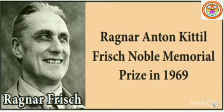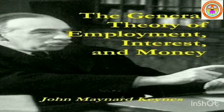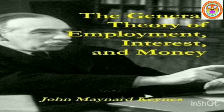a Norwegian economist, Ragnar Anton Kittelfrich, who got the first Nobel Prize in Economic Sciences in the year 1969. The well-known British economist, J.M. Keynes, propounded his own theory and wrote his famous book, General Theory of Employment, Interest and Money, published in 1936.